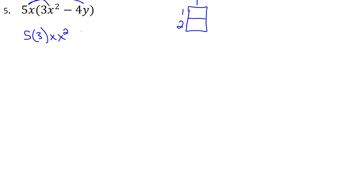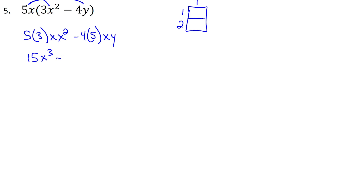If we were making a grid we would have 2 cells, and that goes along with this distribution. So we get 5x times 3x², which gives us 5 times 3, x times x², and then 5x times -4y gives -4 times 5, x times y. The order of any of this multiplication doesn't matter. Simplifying: 5 times 3 is 15x³, minus 20xy. We have two terms matching our grid of two cells.